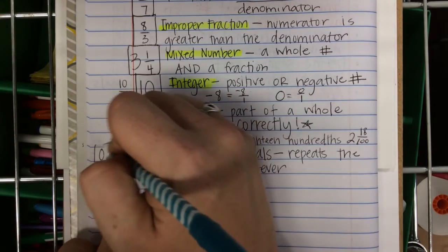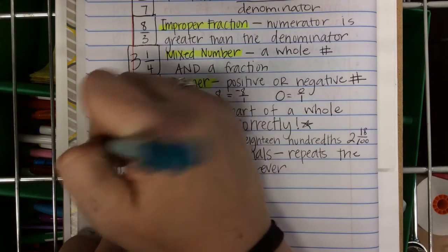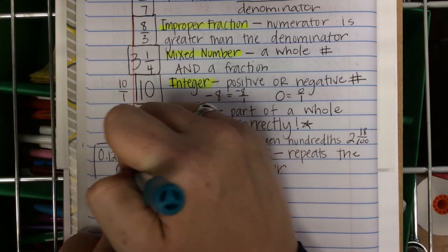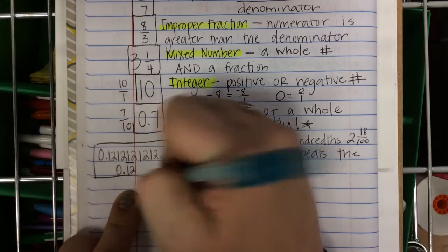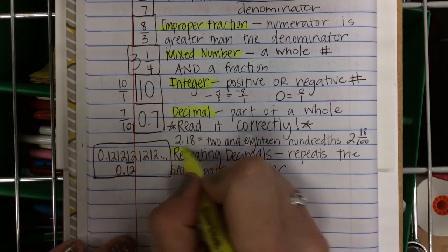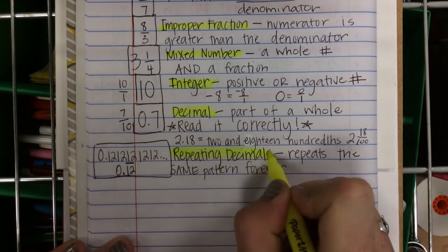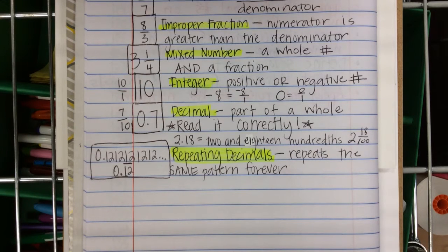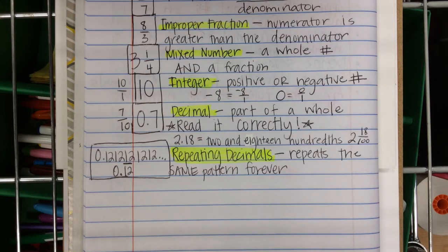Repeating decimals are also rational numbers. Not just decimals, but repeating decimals — if they repeat the same pattern forever and ever, it's a rational number. So: fractions, improper fractions, mixed numbers, integers, decimals, and repeating decimals.